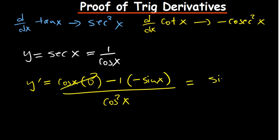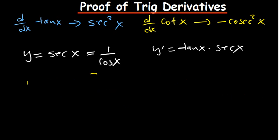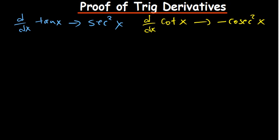The first part is zero, so we have positive sine of x over cosine squared of x. Cosine squared of x is cosine of x multiplied by cosine of x, so y prime becomes sine of x over cosine of x times 1 over cosine of x. Sine of x over cosine of x is tan of x, and 1 over cosine of x is sec of x. So the derivative of sec of x is equal to sec of x itself multiplied by tan of x.